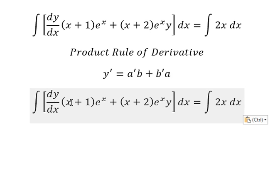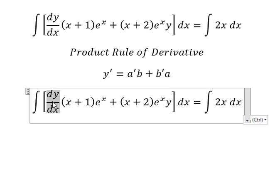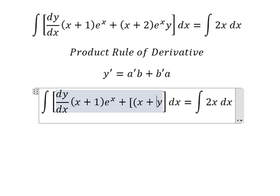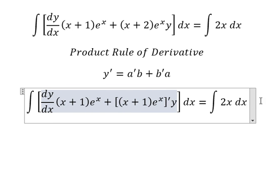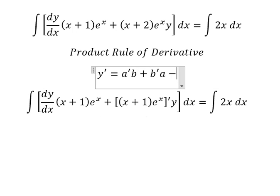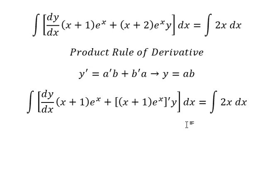So in this one we have the first derivative of a multiplied by b, and this one we have the first derivative of b multiplied by a. So the integration of this one, we have y equals ab.